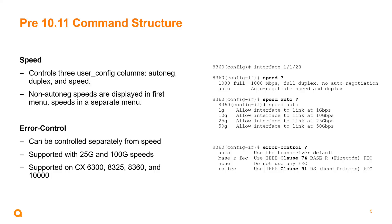When we're looking at the pre-10.11 command structure for error control, these can be configured separately from the speed command, and these are supported with 25 gig and 100 gig speeds, and are supported on the CX6300, 8325, 8360, and 10000. You'll notice with the error control command, when you run the question mark and get your list of options for the next command, you'll see the clause numbers listed in the base RFEC as well as the RSFEC.